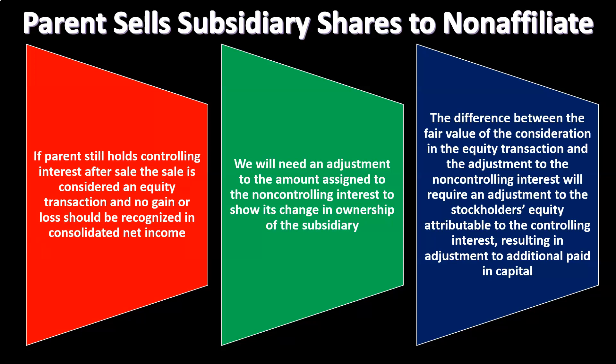If the parent still holds a controlling interest after the sale — still has over 51 percent — the general rule is that the sale is considered an equity transaction, and no gain or loss should be recognized in the consolidated net income. So we should not have any gain or loss in the net income of the consolidation with respect to a sale to a non-affiliated party, as long as the controlling interest retains control after the sale.